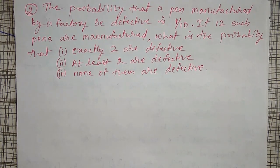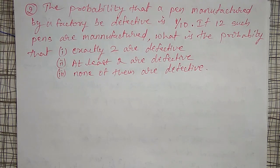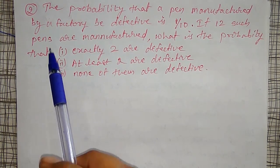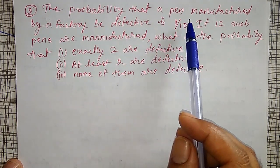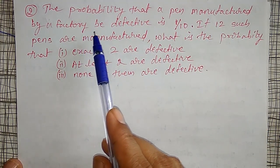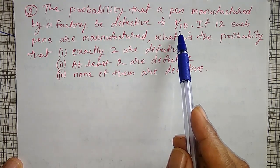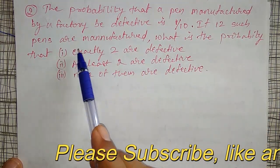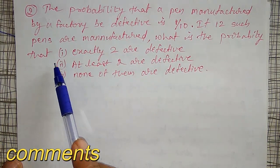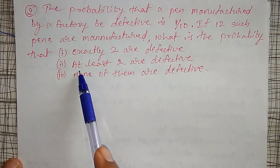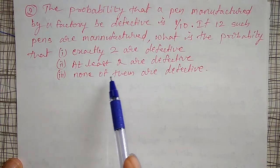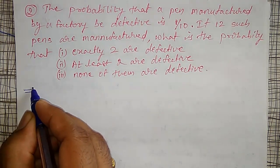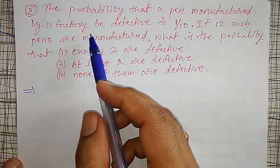Let me solve some more examples on probability distribution, particularly binomial probability distribution. In binomial, the number of trials are fixed. The problem states: the probability that a pen manufactured by a factory is defective is 1/10. If 12 such pens are manufactured, what is the probability that exactly two are defective, at least two are defective, and none of them are defective?